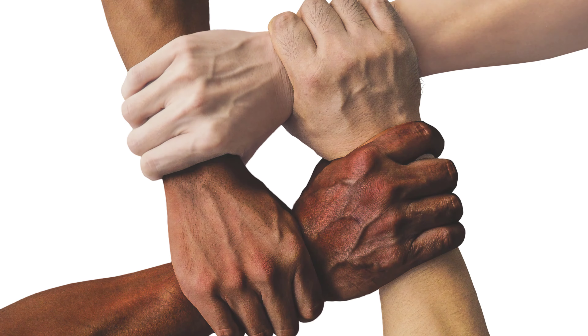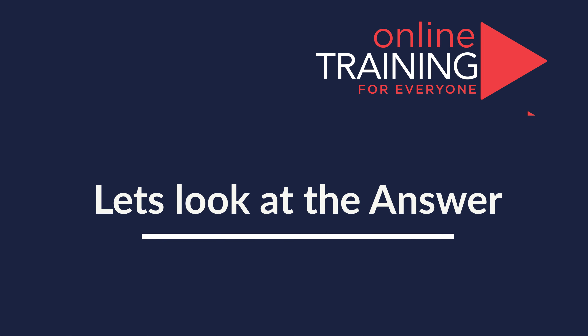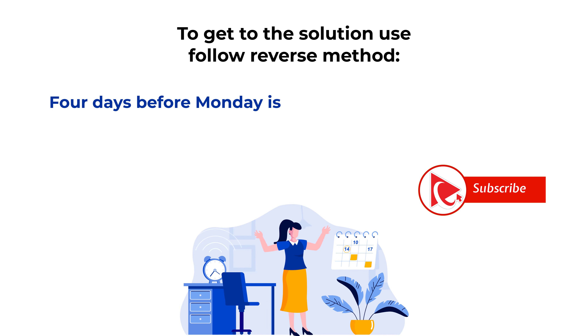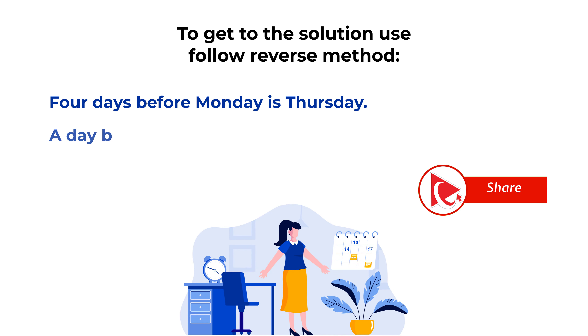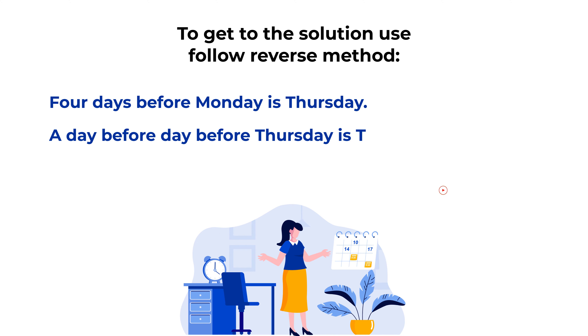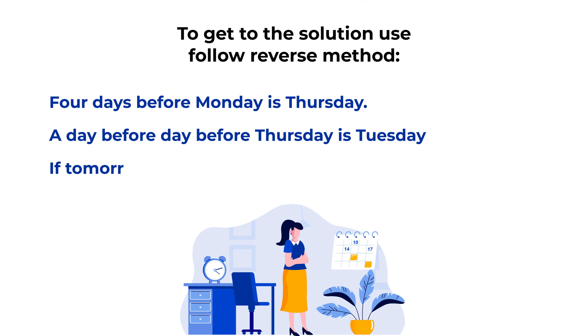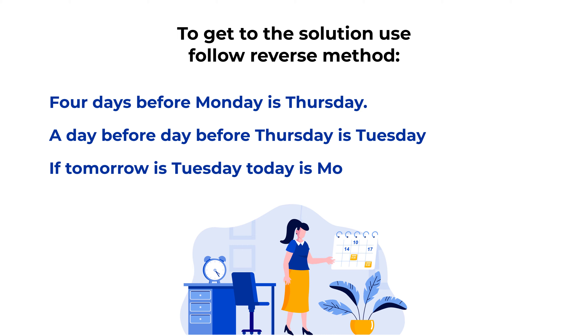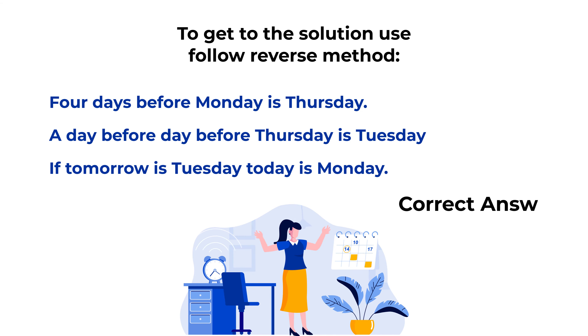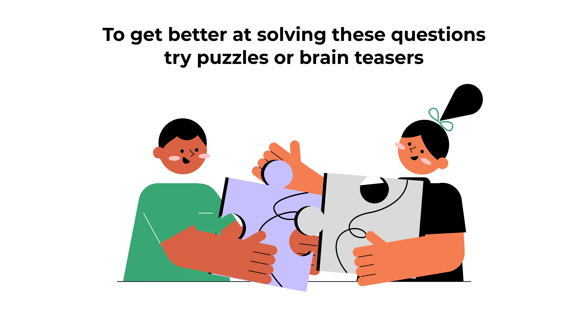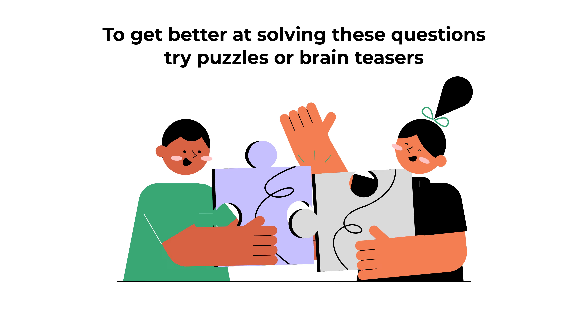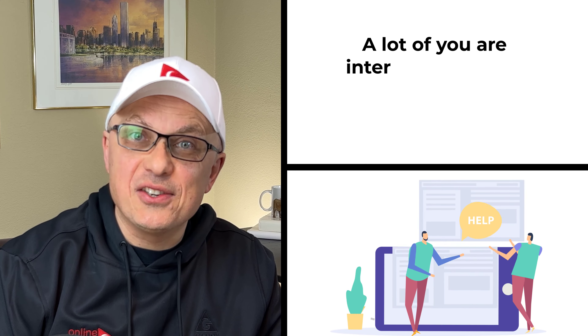To solve these types of problems, analyze them in reverse. Four days before Monday is Thursday. The day before the day before Thursday is Tuesday. If tomorrow is Tuesday, then today is Monday. The correct answer is choice B, Monday.